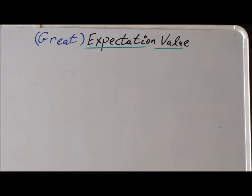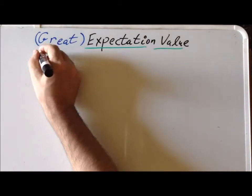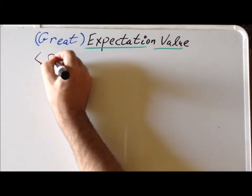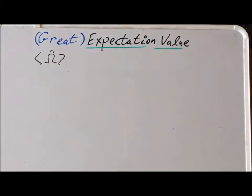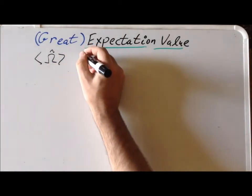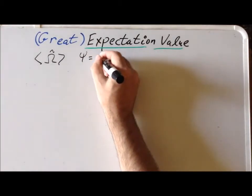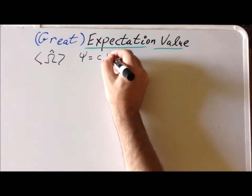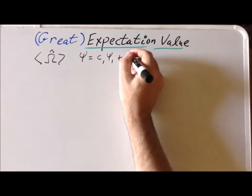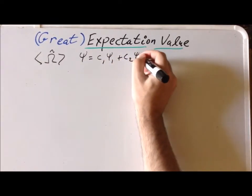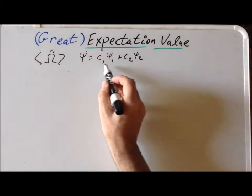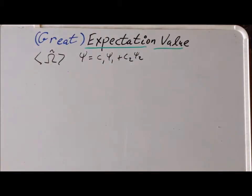Hello. In this video, we are going to derive an expression for the expectation value of an operator, omega, which we write this way. First, we're going to assume that we can describe a particular state of our system as a linear combination, c1 psi1 plus c2 psi2, where psi1 and psi2 are both eigenfunctions of the operator omega.